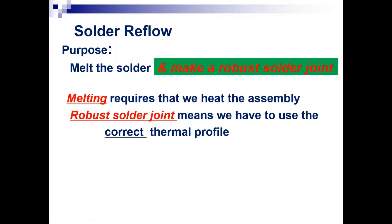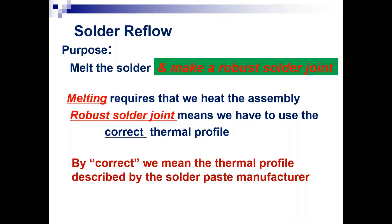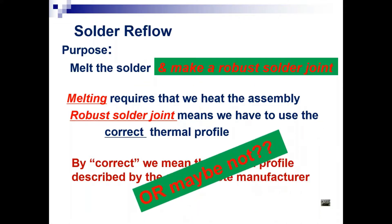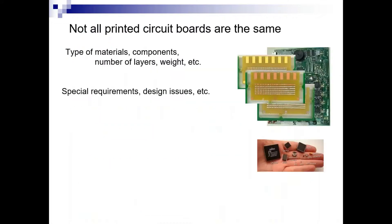Melting requires that we heat the assembly. It's that simple. A robust solder joint means we have to use the correct thermal profile. By correct, we usually mean the thermal profile described by the solder paste manufacturer, but that's not true in all cases, because not all printed circuit boards are the same. They have different types of materials. They have different components, number of layers, weight. Sometimes there are special requirements in design issues.